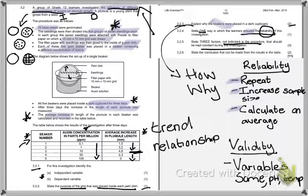Last but not least, it says state the conclusion that can be made from the results in the table. We spoke about this at the beginning. We're looking for the trend or the relationship between the amount of auxins and the average increase in length. As the auxin concentration increases, so does the plumule length. However, it meets its optimum at 10 parts per million, and then plumule length decreases after that.